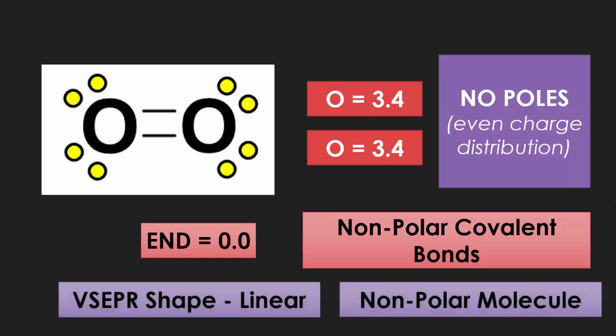If there is no dipole, then it has got to be a non-polar molecule, because it is a symmetrical shape. And due to the symmetry of this shape, you can see that it is linear.